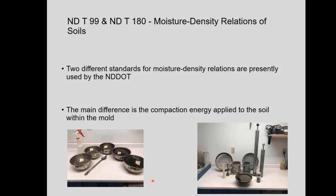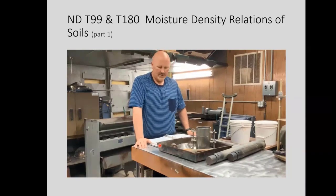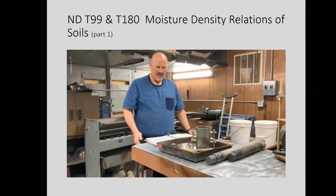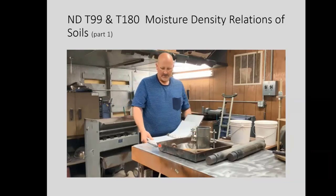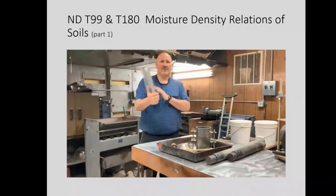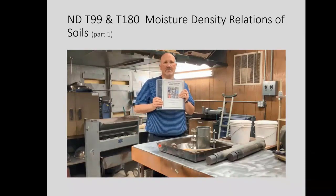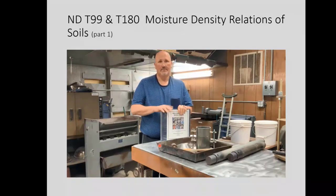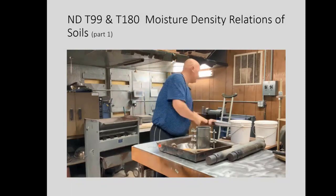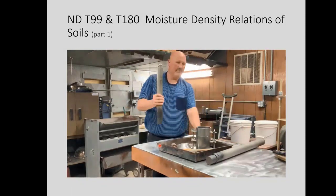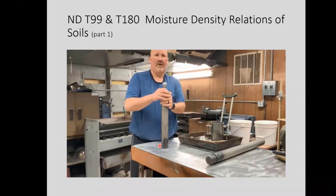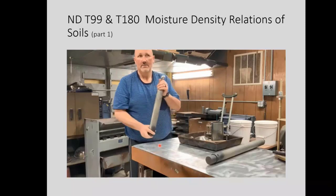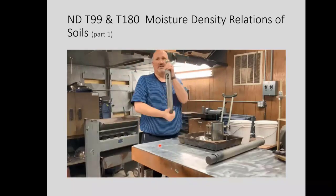I'm going to go ahead and play the videos. Hi, I'm Mark Correlli with North Dakota DOT, Fargo District. Josh Erickson and myself are going to show you the North Dakota T99 and T180 moisture density relation of soils, found in the North Dakota DOT Field Sampling and Testing Manual. Please check the DOT website for the most current versions. North Dakota DOT only accepts Method A and Method D. This is a 5.5-pound hammer with a 12-inch drop — the method we're actually showing today is T180 Method A, so we won't be using this hammer, but I wanted to show it.